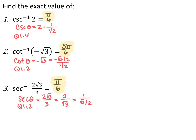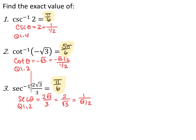For the first one, cosecant inverse of two means that the cosecant of theta equals two in quadrants one or four. Cosecant is r over y, so on the unit circle r equals one, which means y equals one-half. The angle giving a y-coordinate of one-half in quadrants one or four is pi over six. For the next one, cotangent inverse of negative root three means cotangent of theta equals negative root three in quadrants one or two. Cotangent is x over y, so that is negative root three over two divided by one-half, giving five pi over six.